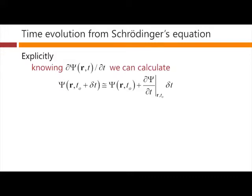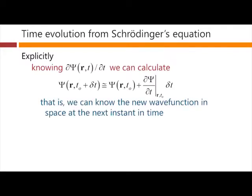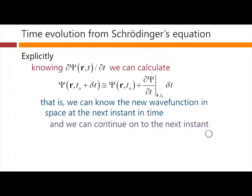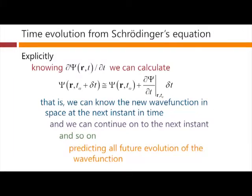So we can calculate the future wave by integrating this equation to deduce psi of r and t at all future times. For example, at some time just a small instant delta t later, approximately speaking, the new wave would be the old wave plus the derivative in time at each point in space times this little increment delta t. In other words, from knowing the wave at this time and knowing its derivative, we can multiply that derivative by a small amount of time to get the wave that small amount of time later. So we can know the new wave function in space at the next instant in time, and we can keep doing this — finding the wave at the next instant, another delta t later, and so on — predicting all of the future evolution of the wave function. Technically, all we're doing is integrating this wave equation in time.